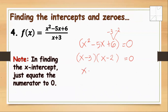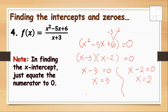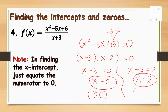So we have (x minus 3)(x minus 2) equals 0. Setting x minus 3 equals 0 gives x equals positive 3. Setting x minus 2 equals 0 gives x equals positive 2. These are the x-intercepts of the rational function, expressed as points: (3, 0) and (2, 0).